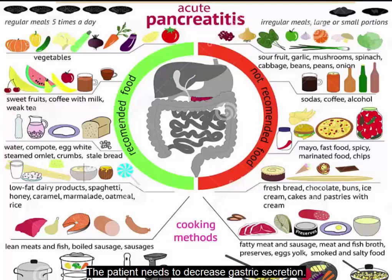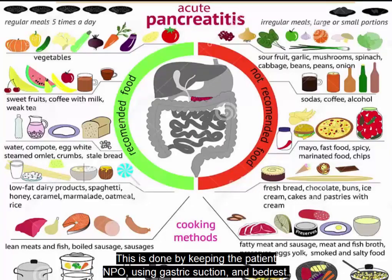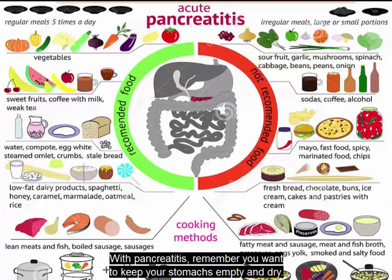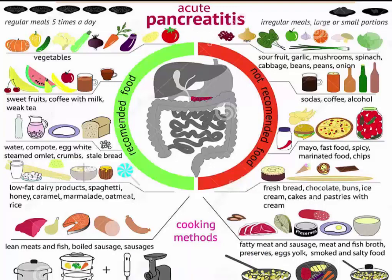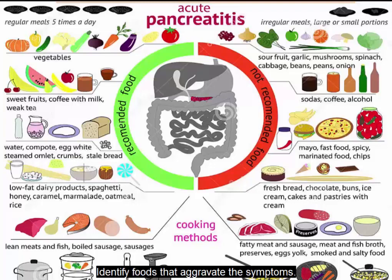Regarding nutritional status, the patient needs to decrease gastric secretions. This is done by keeping the patient NPO using gastric suction and bed rest. Bed rest decreases stomach secretions. With pancreatitis, you want to keep the stomach empty and dry — that is why the NG tube and suction are used. If anything gets into the stomach, the pancreas thinks it needs to make enzymes. Assess for discomfort with meals, monitor the frequency and color of the stool, monitor blood sugar levels, and identify foods that aggravate symptoms.